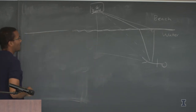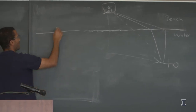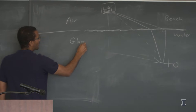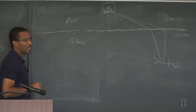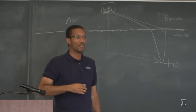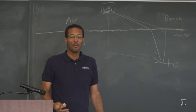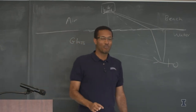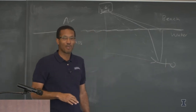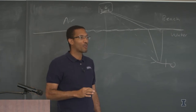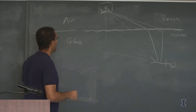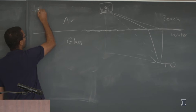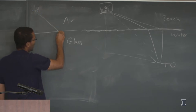At the interface of air and glass, light travels faster in air than in glass. The speed of light in air is approximately 300 meters per microsecond; in glass it's reduced by a factor of about 1.4 to 1.5 depending on the material.